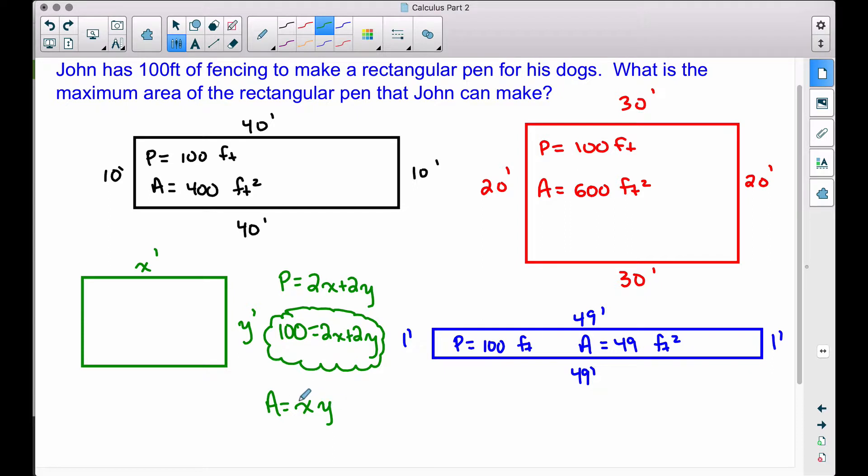But before we do that, let's take the x and the y. We don't want to differentiate both of these variables. So let's use the perimeter equation to get a variable by itself, and then we're going to substitute it into this area formula. Then we'll find the derivative. Then we'll set it equal to zero. Then we'll be able to find our maximum area.